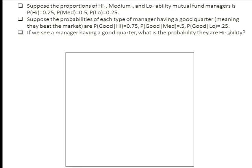So if we call these areas A, B, and C, what we want to know — the probability that you're high ability given that you have a good quarter — by Bayes' rule, is the joint probability of a manager being high and having a good outcome (which is A), as a proportion of all the ways that a good outcome could have occurred. Because I made this a box with rectangles and an area of one, if you actually do the calculations you'll get the actual numerical answer.